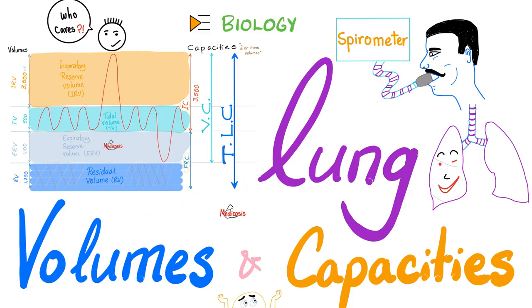First of all, what's the difference between a volume and a capacity? In this particular subject, a volume is one entity. A capacity is two or more entities. So two volumes lumped together is a capacity. Three volumes lumped together are also a capacity. But a volume is just one stinking thing.